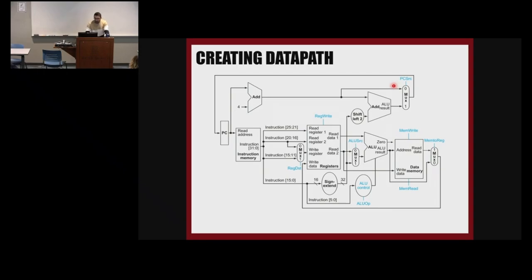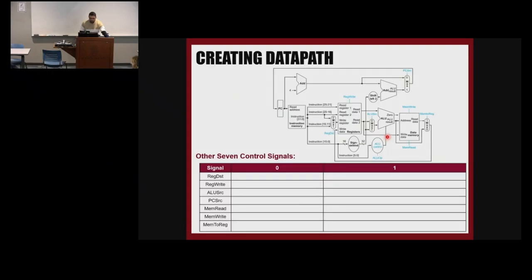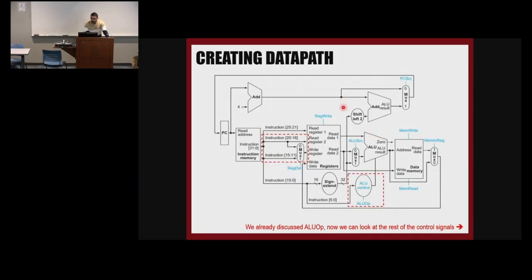The updated data path includes a multiplexer choosing between bits 20 to 16 and bits 15 to 11 for the write register, and an ALU control unit. The function field — bits 0 to 5 of the instruction — goes to the ALU control unit. Bits 21 to 25 go to read register one and bits 16 to 20 go to read register two always. Bits 0 to 15 are the offset going to sign extension. The control signals are: register write, register destination, ALU source, PC source, memory read, memory write, and mem2reg.